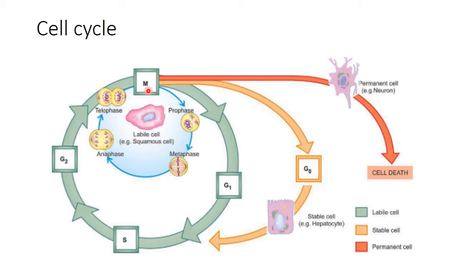After the mitosis phase, or after a successful cell division, the daughter cells enter the G1, or Gap 1, phase. The G1 phase is followed by S phase, or synthesis phase, where synthesis of nuclear DNA takes place for the next division. This S phase is followed by another gap — G2 phase. In an actively, continually dividing cell, this G2 phase is again followed by M phase, completing the cycle.